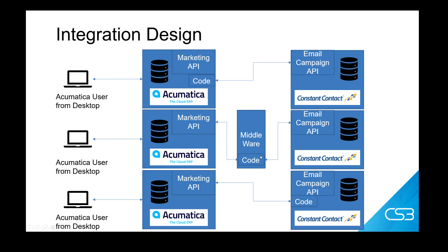The third example shows the application code living inside the Constant Contact program. The Constant Contact API is never used in this example — only the Acumatica marketing API is pushed to or pulled from. Many companies have code that is ready to connect to Acumatica's APIs with minor configurations. When designing integrations, we need to keep in mind that this may also be in existence. Constant Contact's dev team would have recognized the need for an integration point to Acumatica and created it using Acumatica's APIs.